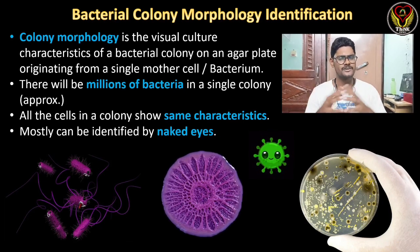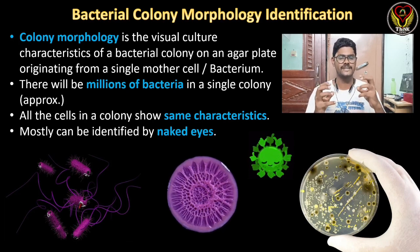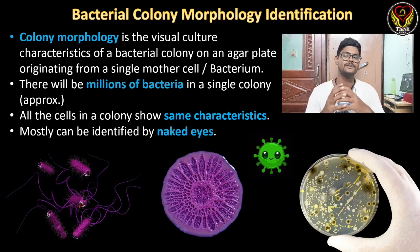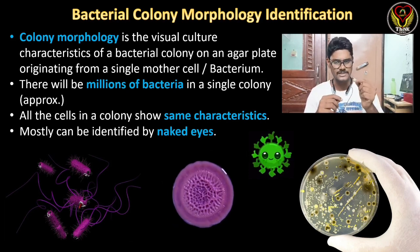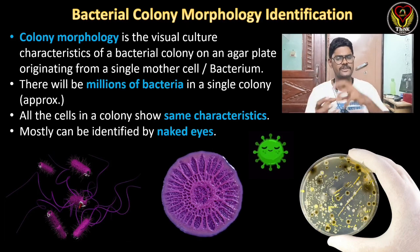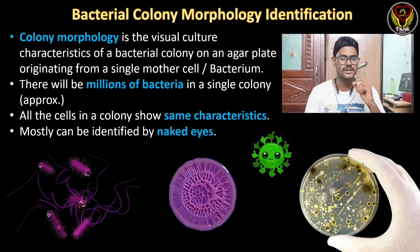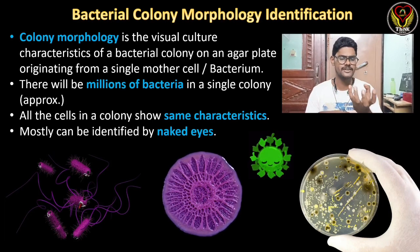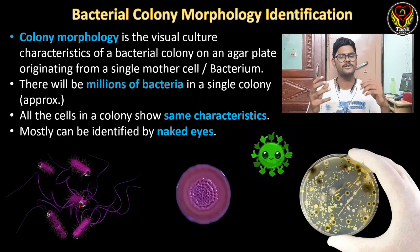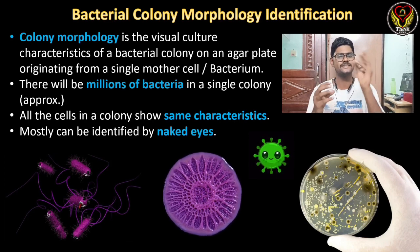So what is colony morphology? It is the visual culture characteristics of a bacterial colony on an agar plate, originating from a single mother cell or bacterium. From a single mother cell, a colony forms, and this colony will have different morphology for different bacteria. We can identify colony morphology only on an agar plate, in a solid medium — not in broth or any liquid medium, because in that the bacteria will be suspended.